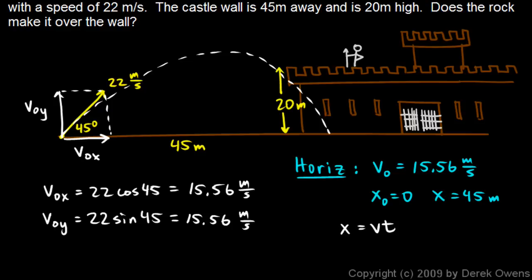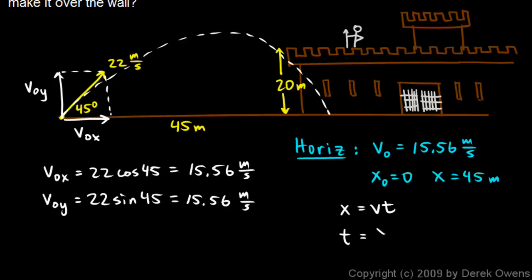And then we'll solve that for t. So I'll write t equals x over v. And then just put in these numbers. 45 meters over 15.56 meters per second. And that comes out to 2.89 seconds.